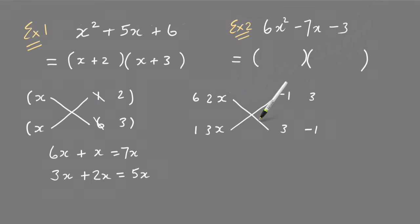Doing the same thing as in the last example, multiplying along the lines. I'm going to start with the 2 and the 3. 3 times 2x is 6x, and minus 1 times 3x is minus 3x. 6x minus 3x is 3x, which is not the middle term, so it's not that pair of factors.